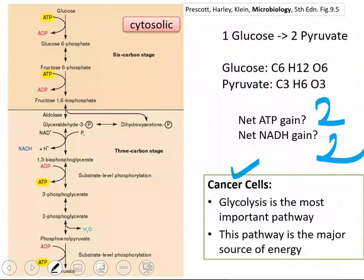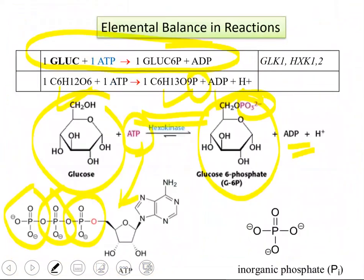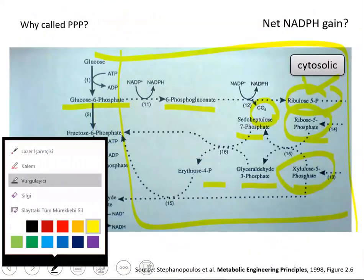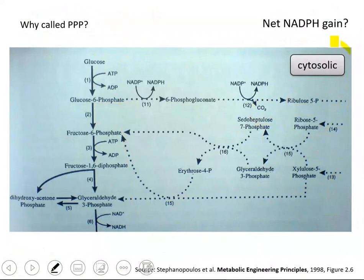One thing I didn't emphasize: all the glycolysis reactions are cytosolic, meaning the related enzymes are in the cytoplasm of the cell and those reactions take place in the cytoplasm. The same is true for the pentose phosphate pathway — it is also cytosolic. The related enzymes are located in the cytoplasm, and that's where all those metabolites are formed.